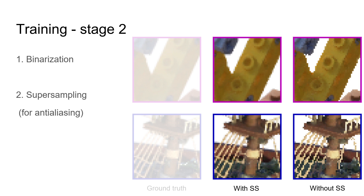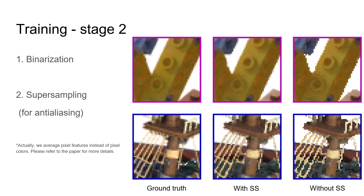That is, we divide each pixel into four subpixels, perform the computation for each subpixel, and average the colors of the subpixels to obtain the color of the original pixel. This supersampling step can give us smooth boundaries similar to the ground truth.